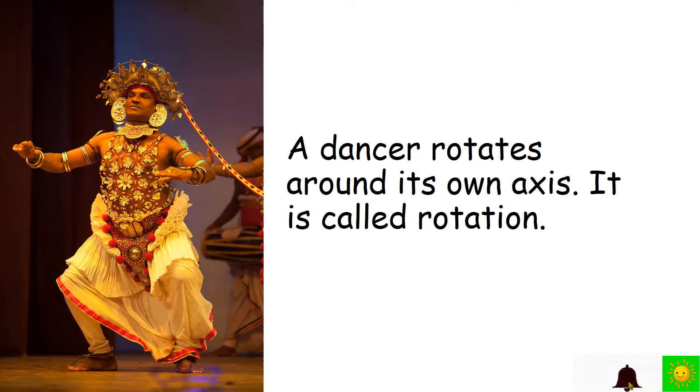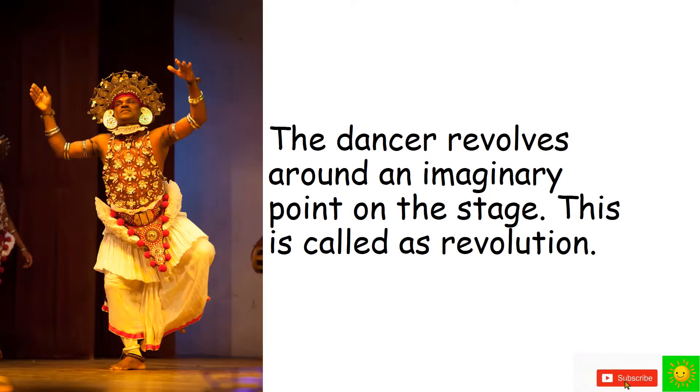Consider a dancing event by a dancer to understand the concept of rotation and revolution. A dancer rotates around its own axis. It is called rotation. At the same time, the dancer revolves around an imaginary point on the stage. This is called revolution.